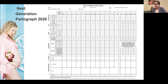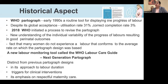In 2020, WHO gave us a new next-generation partograph with seven sections, which includes the second stage of labor — management of which helps prevent many complications. In the 1990s, the WHO partograph was a routine tool for displaying labor progress, but despite global acceptance, the utilization rate was only 31% and the correct completion rate was just 3%.